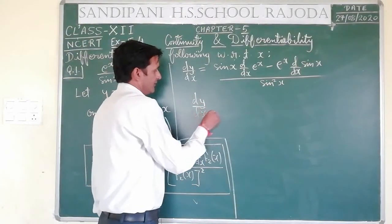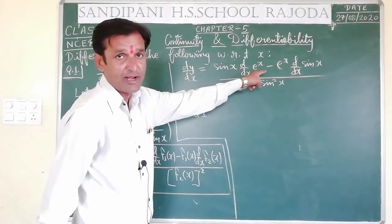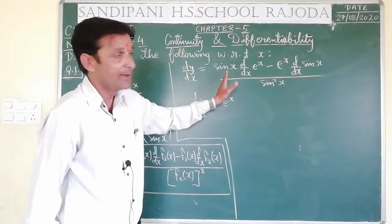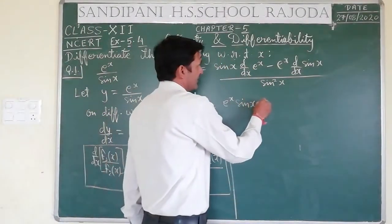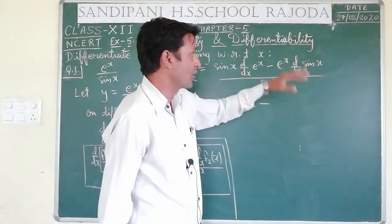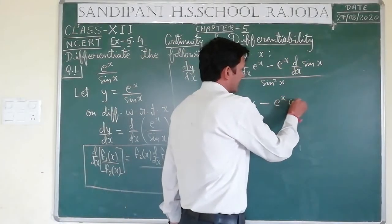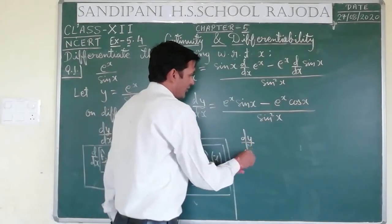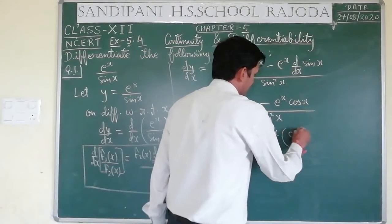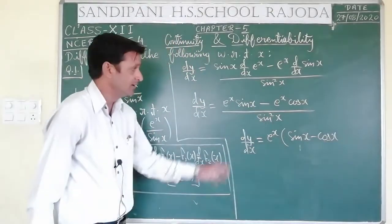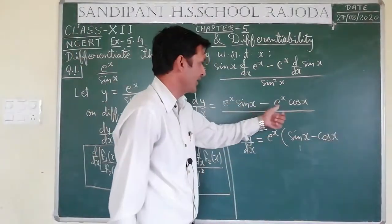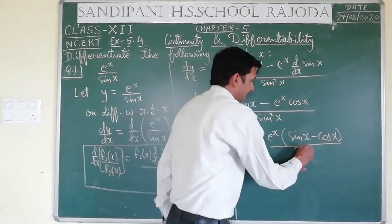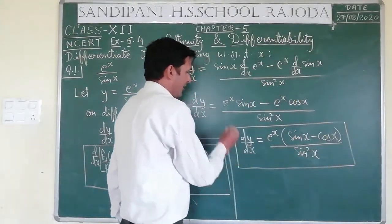sin x का differentiation cos x होता है, तो e^x · cos x. इसके अपन में sin²x मिलेगा। dy/dx — यहाँ से e^x common निकालेंगे क्योंकि दोनों terms में e^x था — so e^x(sin x - cos x) / sin²x. This is our final answer for question number 1.